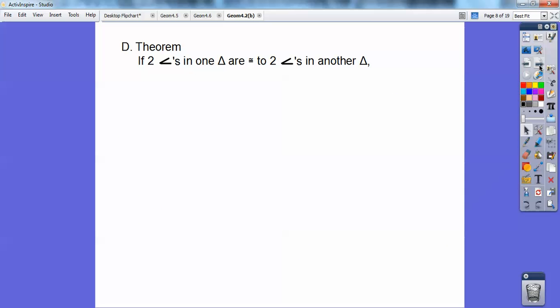So theorems. If two angles in one triangle are congruent to two angles in another triangle, let's take a picture of this right here. That's talking about this. You see how two angles over here are equal to two angles over here? Well, if those two angles are equal, then that means that the third pair of angles have to be equal because they add up to 180, remember?